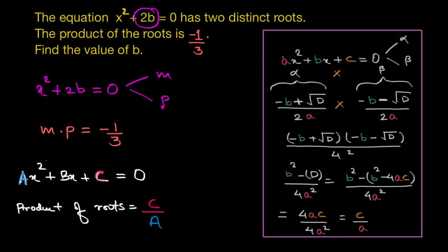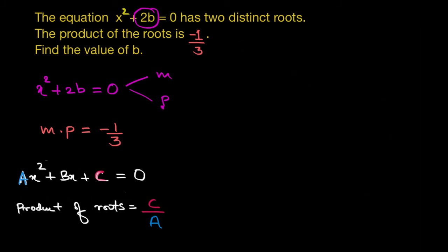As of now let's use this expression c/a to find the value of this unknown b. Let's first of all change this into standard form. So we will have x². Now there is no term with variable x, so we can write that as 0 times x. This is actually equal to 0 so it won't make any difference. Plus the constant value that is 2b equal to 0.